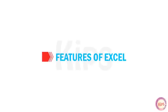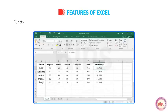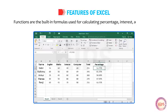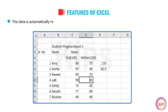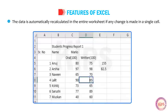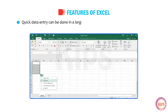Let us discuss features of MS Excel. Formulas are mainly used for performing simple and complex mathematical calculations. Functions are the built-in formulas used for calculating percentage, interest, average, etc. Formatting features improve the appearance of data. The data is automatically recalculated in the entire worksheet if any change is made in a single cell. Data can be searched quickly and if required, replaced instantly.